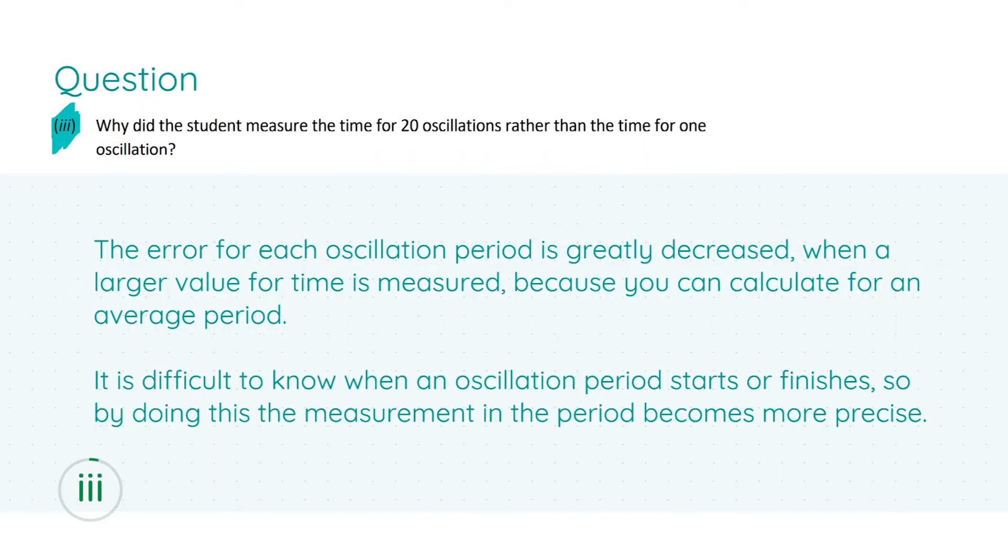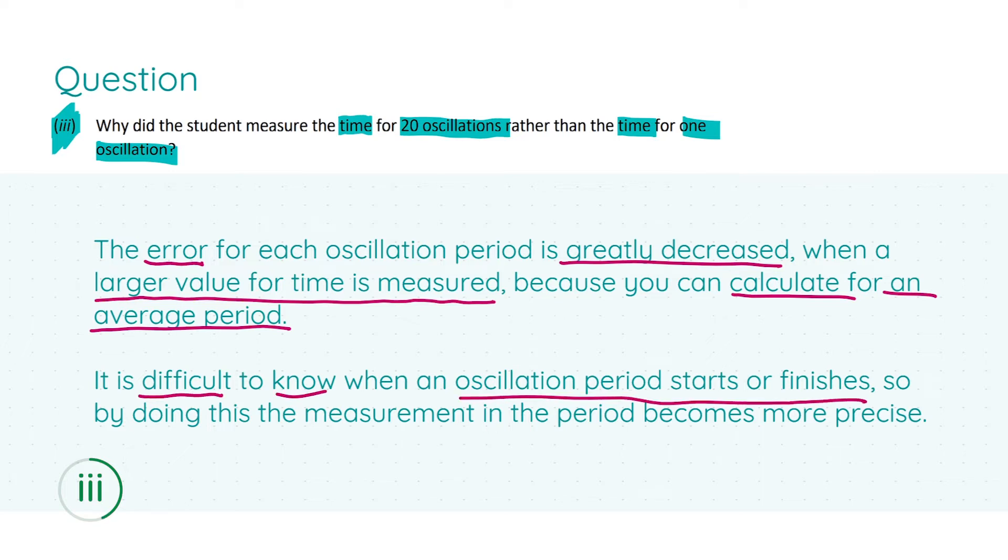In part three, we're asked why the student measured the time for 20 oscillations rather than the time for one oscillation. The answer is: the error for each oscillation period is greatly decreased when a larger value for time is measured because you can calculate an average period, and it's also difficult to know when an oscillation period starts or finishes, so this measurement becomes more precise. Any of the underlined sentences will get you full marks. If you're pushing for higher marks, know your precautions and error reduction methods very well because they always ask questions like this in experiment questions.